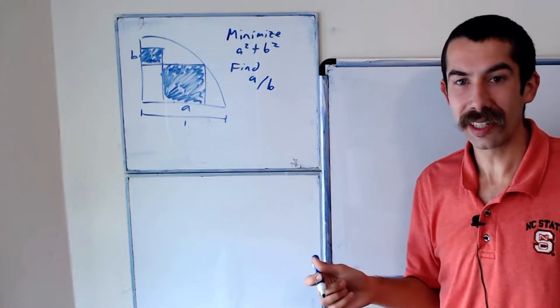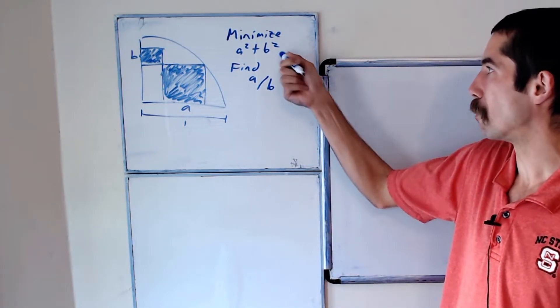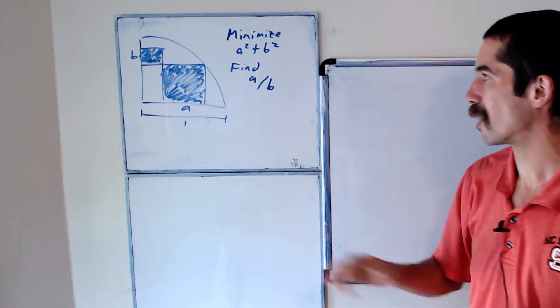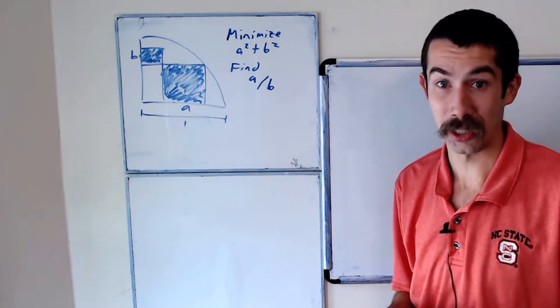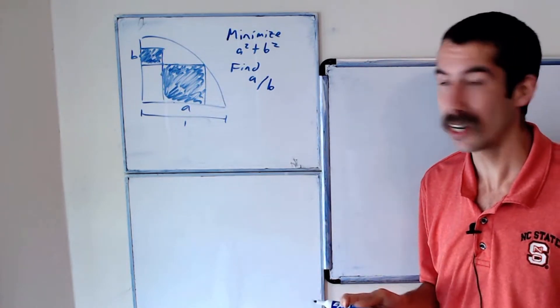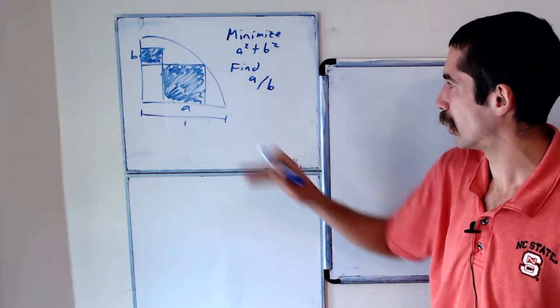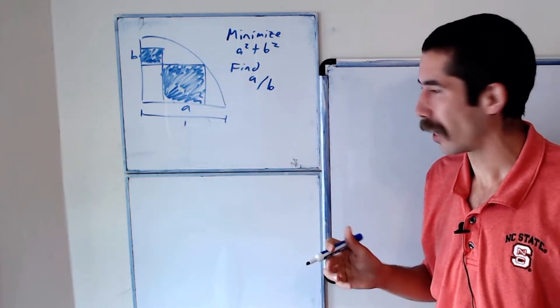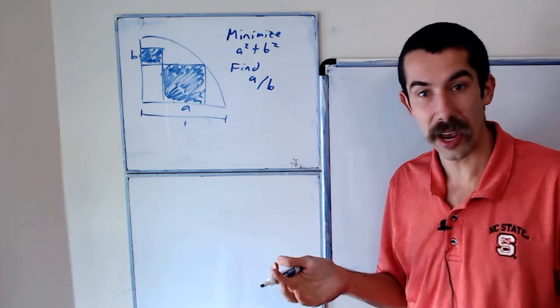This is clearly an optimization problem. We want to minimize a squared plus b squared subject to this geometry. So let's take our picture and try to solve for b in terms of a.